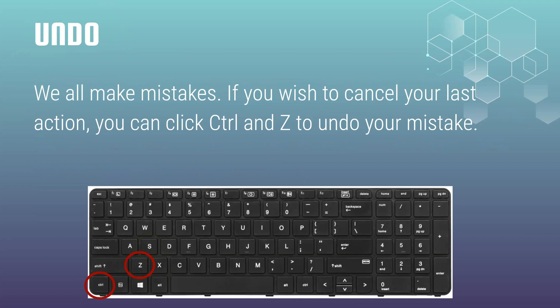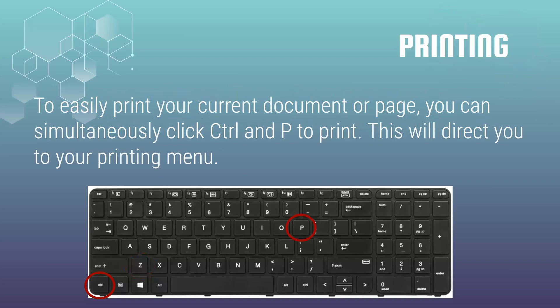Undo. We all make mistakes, whether it be writing or just typing, for example. If you want to undo your mistake, all you're going to do is tap the control button plus Z. Printing. Do you want to print a document or a file? Tap control plus P to print.